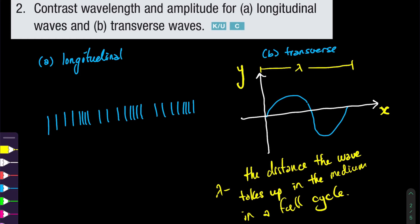For the transverse wave, the amplitude gives you the maximum displacement from the equilibrium line at a single moment in time.